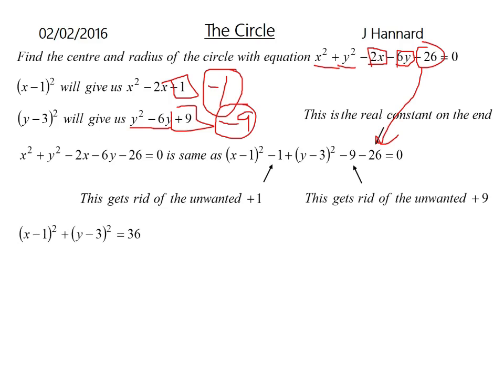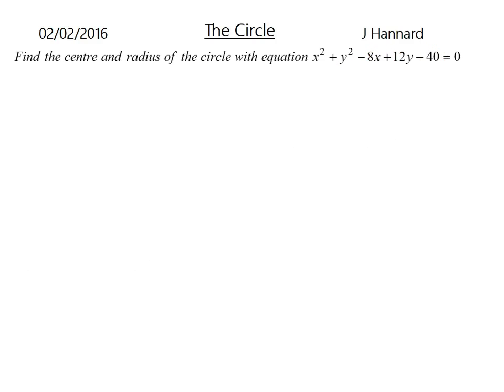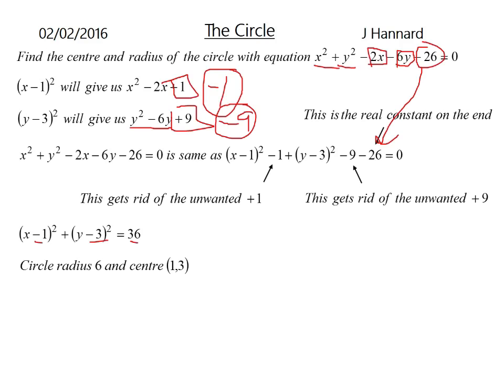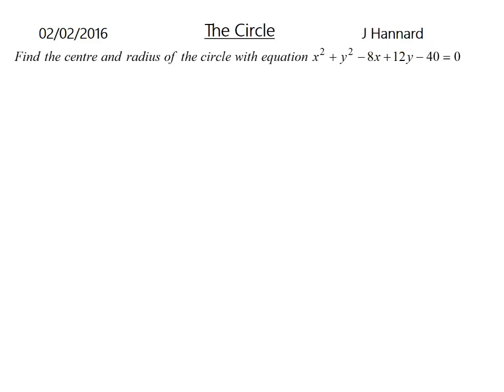This gets rid of the unwanted plus 1. And that gets rid of the plus 9. The unwanted plus 9 that we've talked about up here. And that's the real constant on the end. Switcheroo, everything on to the other side. And that is lovely. So that is a circle with the center of 1, 3, and a radius of 6. Remember, change the sign of what's in the bracket and square root here, R squared. And let's do another one of those. So that is the hardest concept of circle theory at this stage. So try and get your head around that. I'll try and explain it a little bit better on this one.